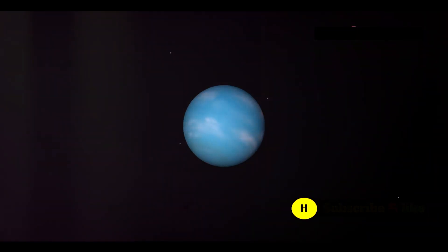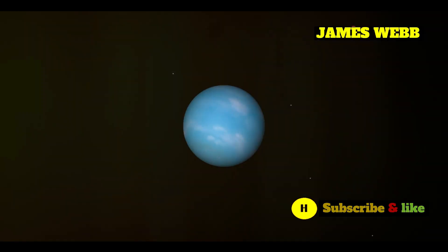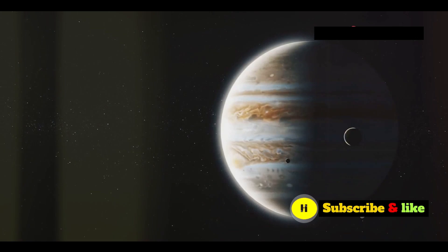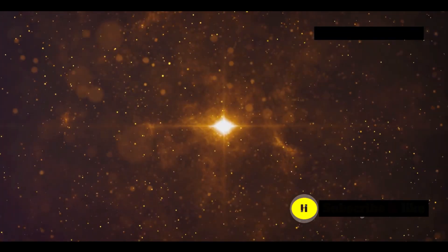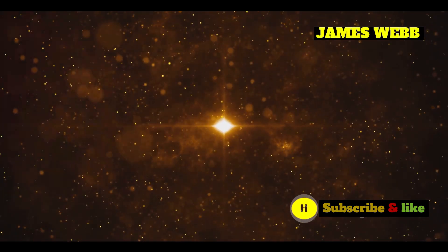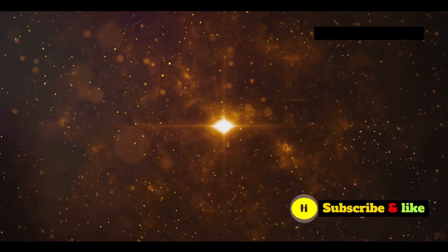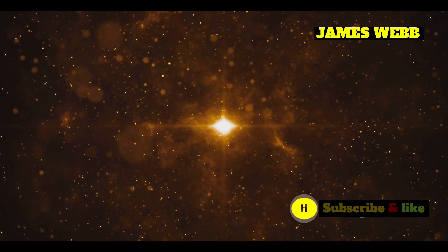55 Cancri E is a planet unlike any in our solar system. It's a super-Earth, meaning it's bigger and heavier than Earth but smaller than Neptune. This interesting world orbits a star called 55 Cancri, located about 41 light-years away from us in the constellation Cancer.